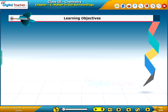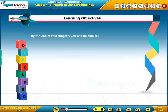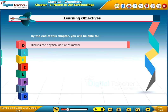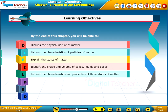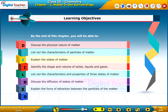Learning Objectives. By the end of this chapter, you will be able to discuss the physical nature of matter, list out the characteristics of particles of matter, explain the states of matter, identify the shape and volume of solids, liquids and gases, and list out the characteristic properties of the three states of matter. Discuss the diffusion of states of matter.